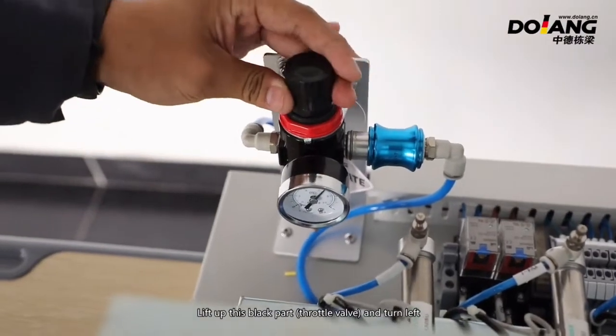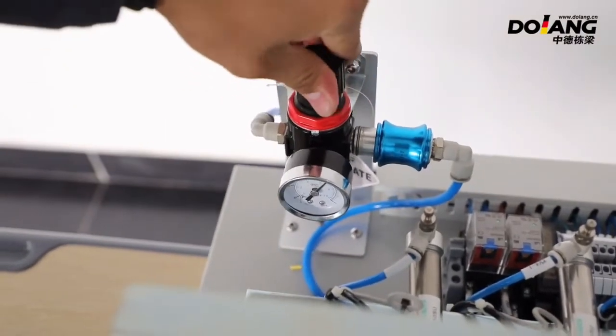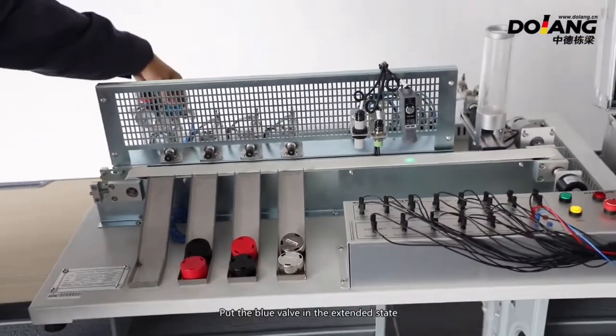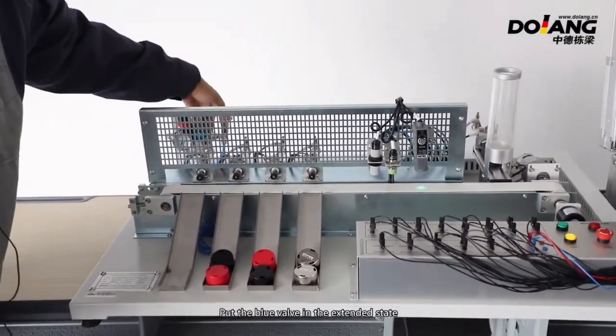Lift up this block part, the throttle valve, and turn it left. Air pressure can be adjusted. After adjustment, put the blue valve in the extended state.